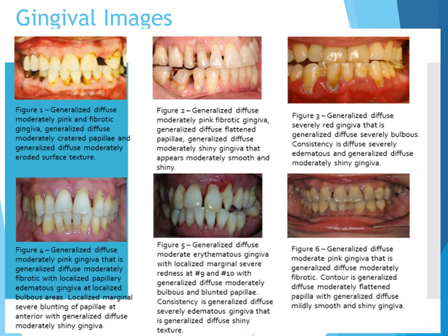Here are gingival images representing our current patient status. In figure one, we see generalized diffuse, moderately pink and fibrotic gingiva, generalized diffuse, moderately cratered papilla, and generalized diffuse, moderately eroded surface texture. In figure two, we have generalized diffuse, moderately pink fibrotic gingiva, generalized diffuse, flattened papilla, and generalized diffuse, moderately smooth and shiny gingiva.